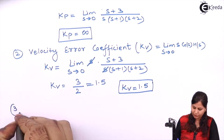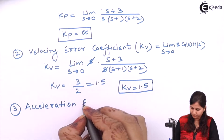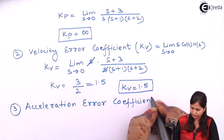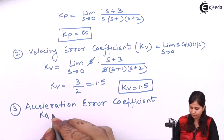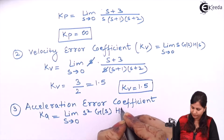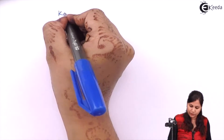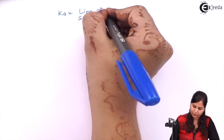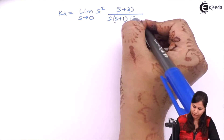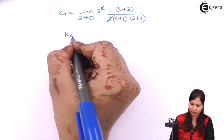The third error coefficient is the acceleration error coefficient. It is denoted Ka and its formula is the limit as S tends to 0 of S²·G(s)H(s). Substituting the values and applying the limit, S² and S cancel, and Ka is equal to 0.